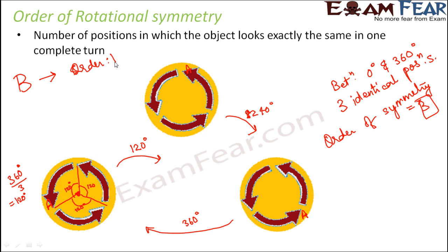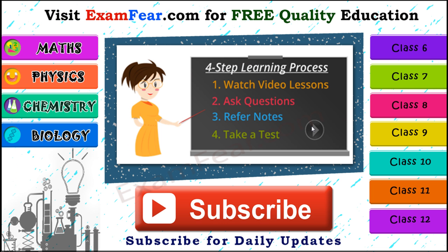So I think with this example, your concept of rotational symmetry and order of rotational symmetry must be clear. If it is not clear, please rewind and try to understand the concept. Thank you. Please visit examfear.com for free quality education. You can learn with a simple four-step learning process: watch video lessons, ask your questions, refer to notes, and take a free online test. We have content for class 6 to 12 on physics, chemistry, mathematics and biology along with practical videos. Please subscribe to our channel for daily updates.